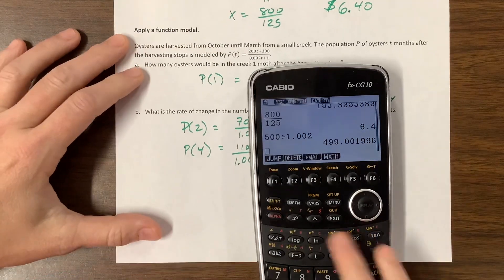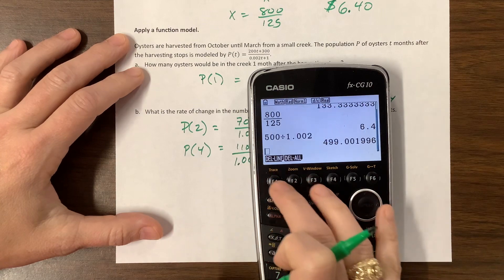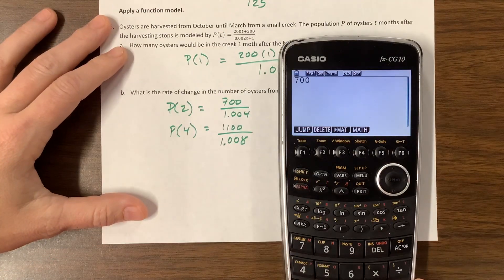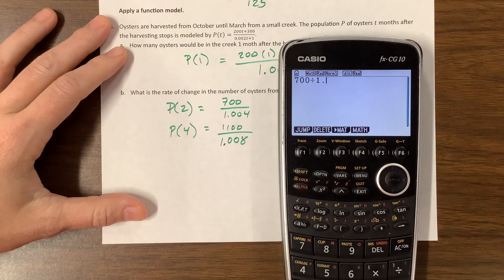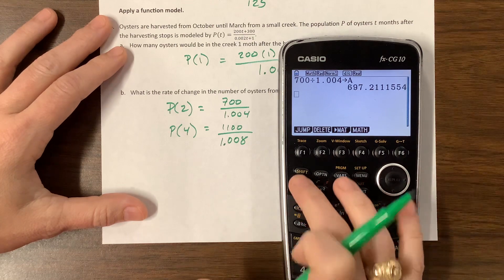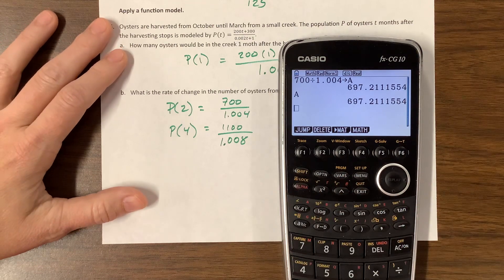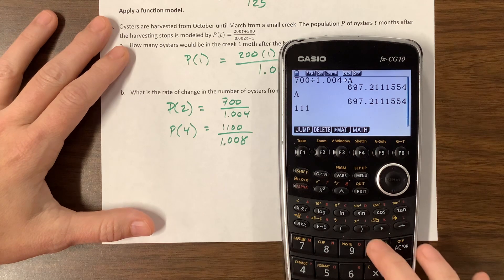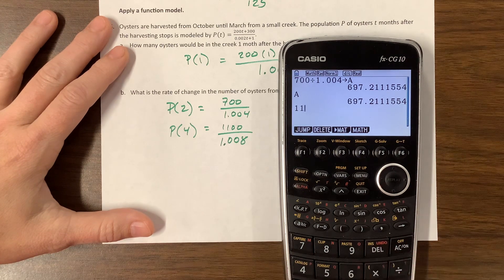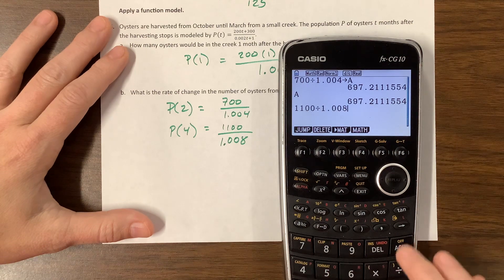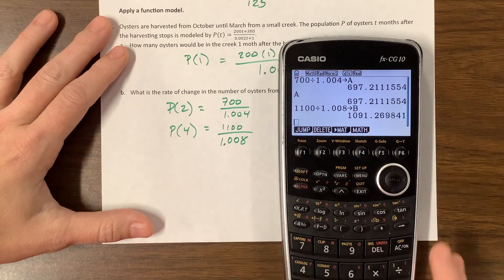Oh, let me show you something while I'm thinking about it. I'm going to take this one. 700 divided by 1.004. I'm going to store this as alpha a. So now if I type in alpha a, it will remember that value for me. I'm going to take the other one. Oh, that's wrong. Yep. Goodness gracious. I'm going to store that as alpha B.